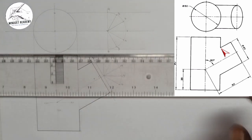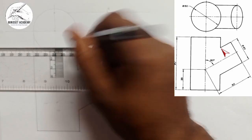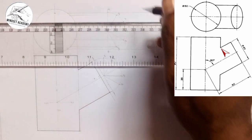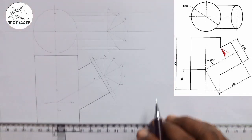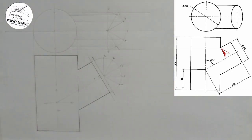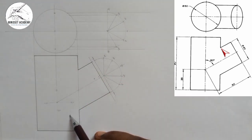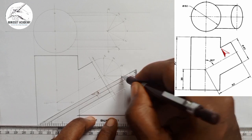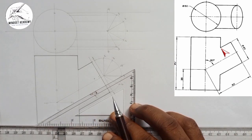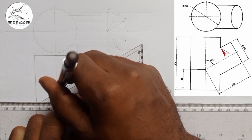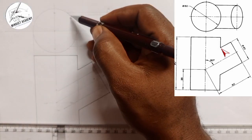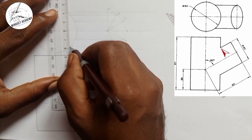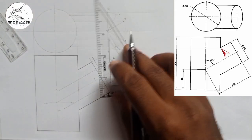I'll project all these points to the circumference of the circle using my T-square, touching each corresponding point. Once that's done, I project each numbered point downward. Point three is projected downward — the lines must be parallel to each other — and three on one side meets three on the other side. Since they line up, I can draw a straight line between them using my set square.